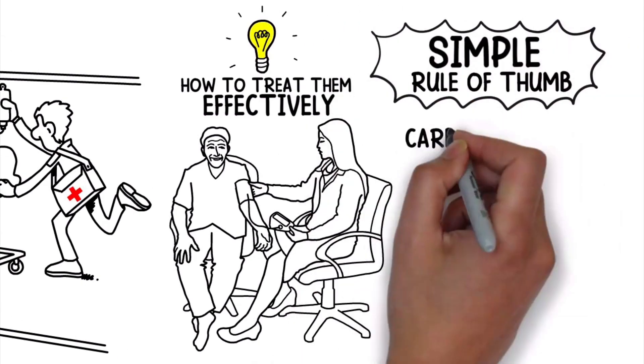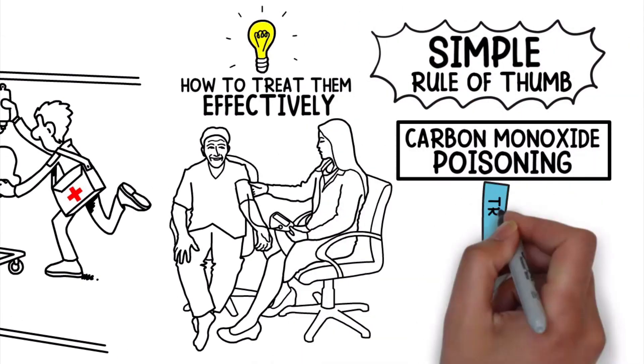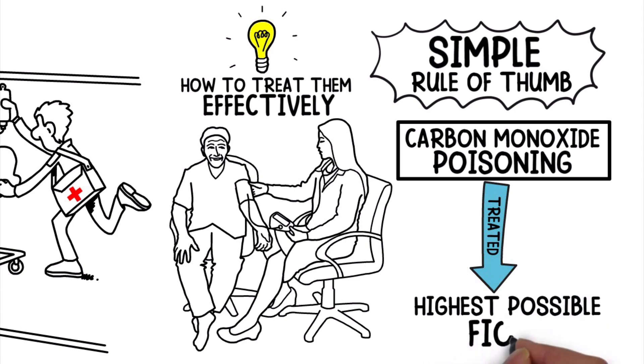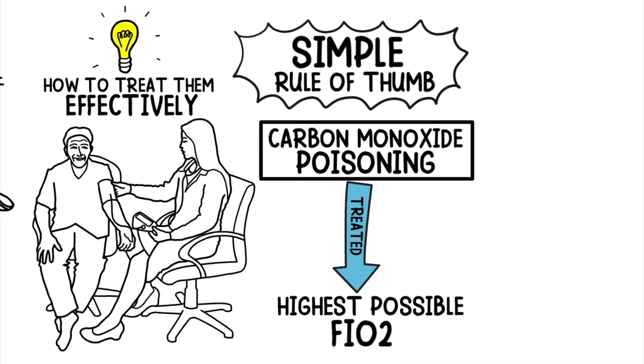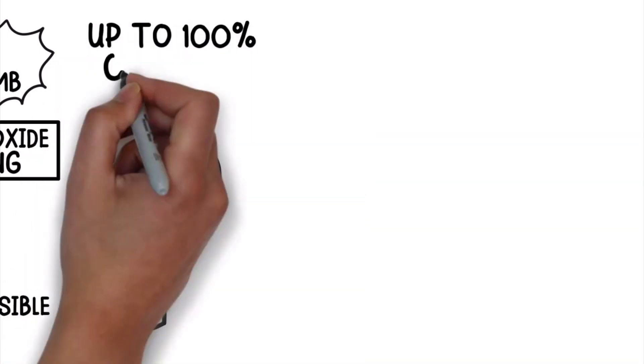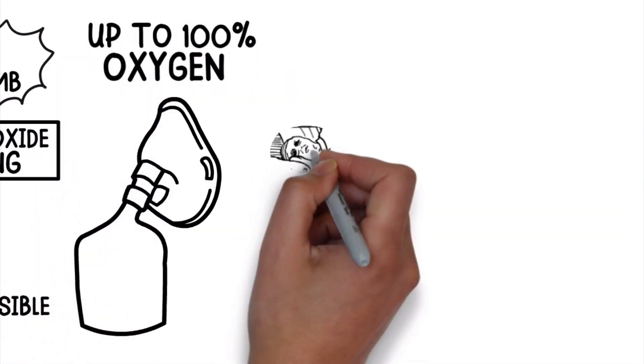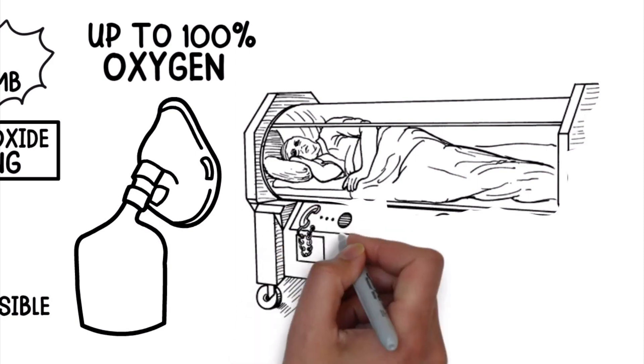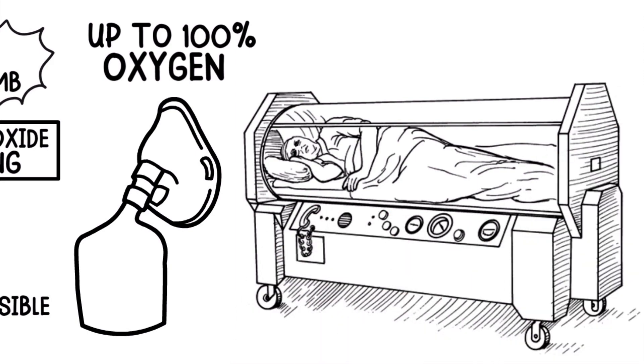Here's a simple rule of thumb. Carbon monoxide poisoning should be treated with the highest possible FiO2 that is available. Initially, a non-rebreathing mask can be used to administer up to 100% oxygen, but the goal should be to place the patient in a hyperbaric oxygen chamber as quickly as possible.